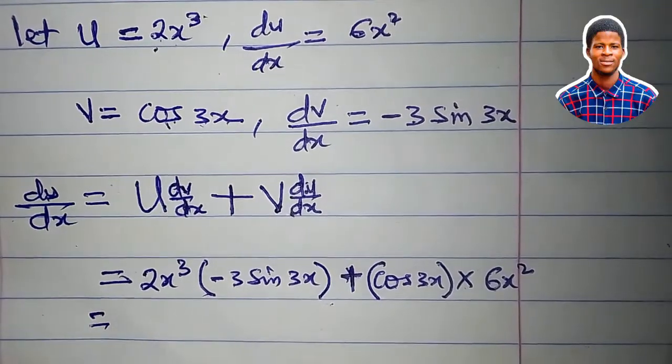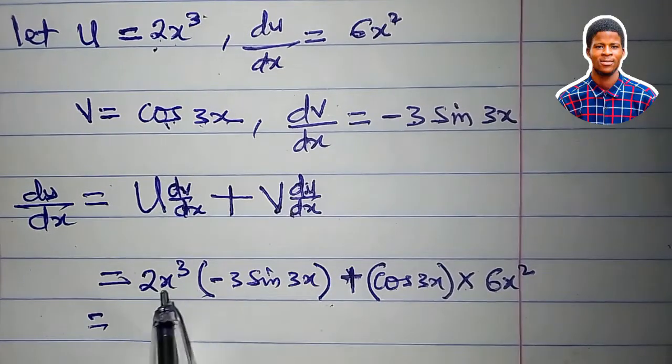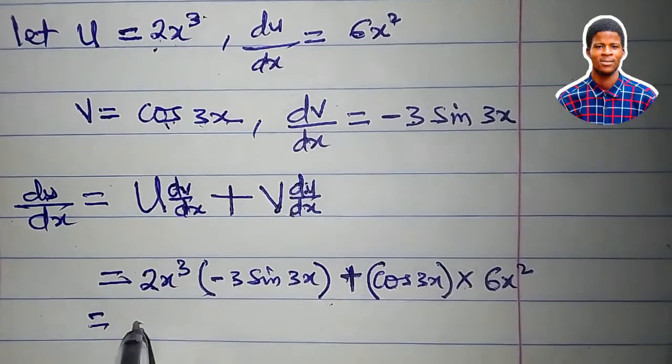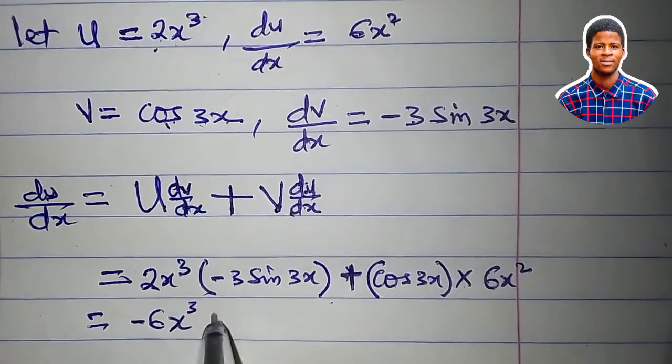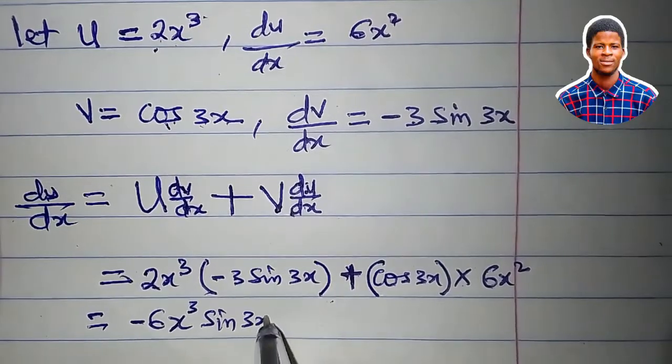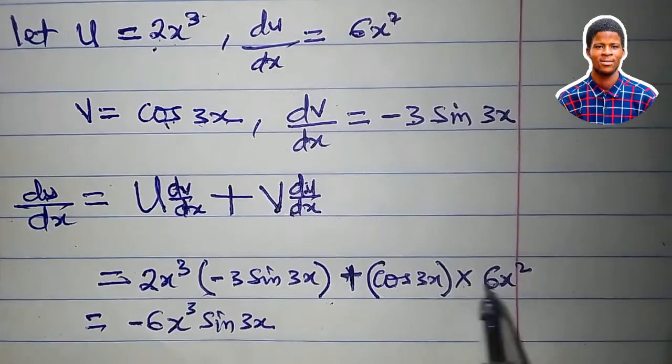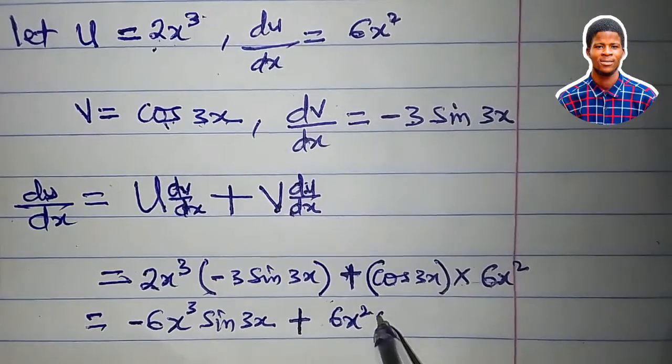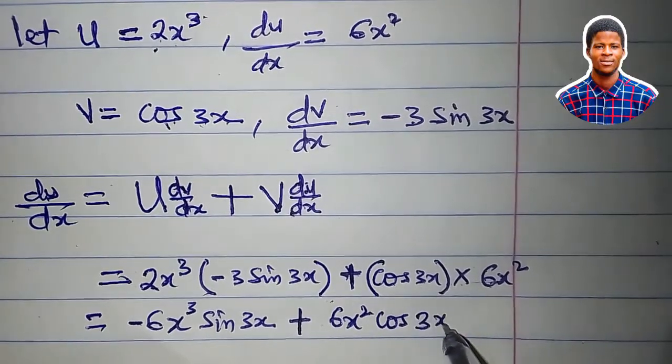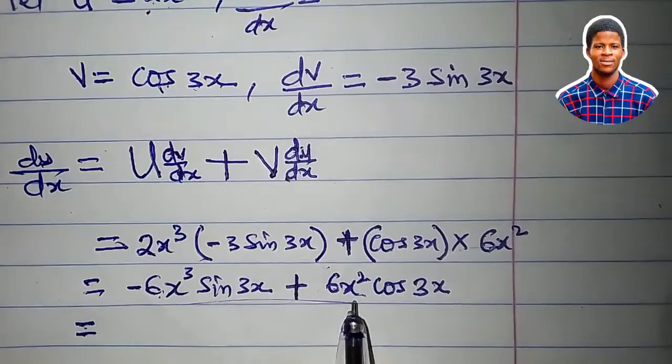So we have, let's expand, 2 times minus 3 is minus 6, so we have minus 6x³ sine 3x. Then here it is equal to 6x² cos 3x. So from this expression,